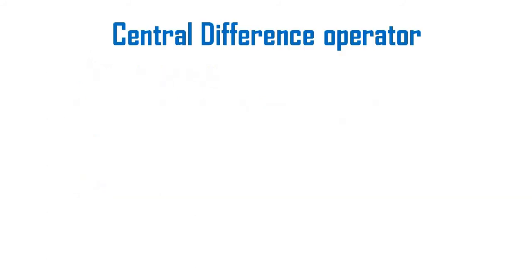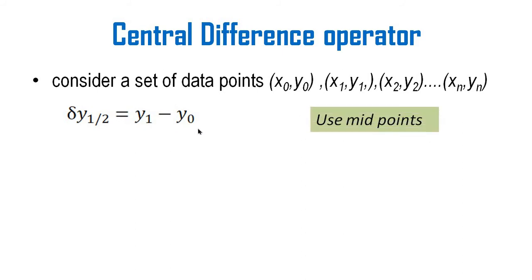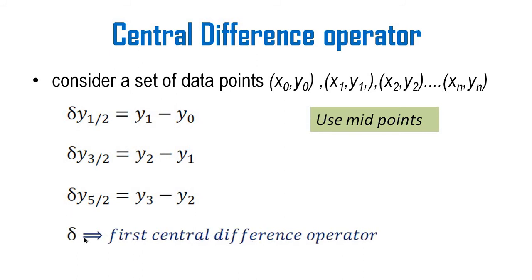Central difference operator: consider a set of data points x₀ y₀, x1 y1, etc. Here we use midpoints. δy(1/2) = y1 − y0, where 1/2 means (1+0)/2. δy(3/2) = y2 − y1, where 3/2 = (2+1)/2. δy(5/2) = y3 − y2. The small letter δ is known as the first central difference operator.